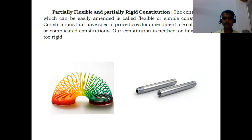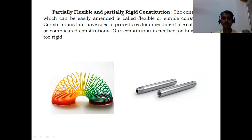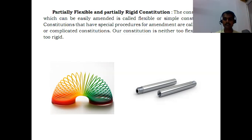Our Indian constitution is partially flexible and partially rigid. When you want to make changes in the Indian constitution, it is a bit flexible — you can make changes according to changing scenarios. However, it is also partially rigid; it is not too easy for the Prime Minister or President to make changes. There are rigid rules and regulations one needs to follow to make amendments.